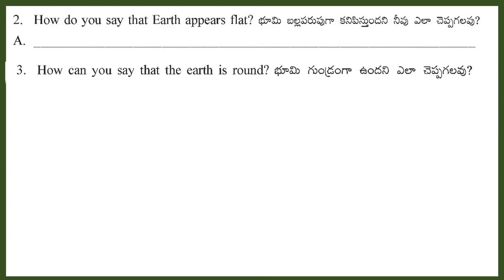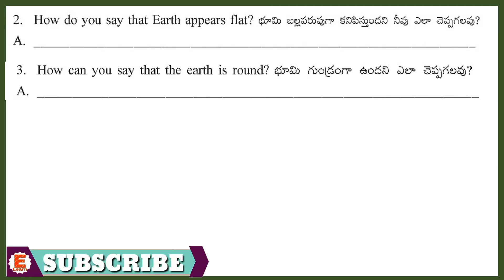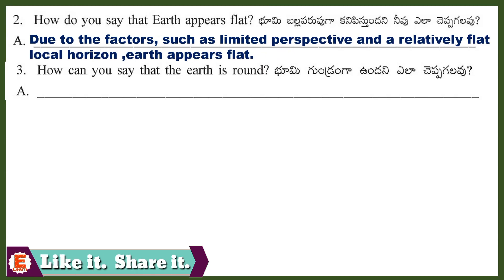Question 2: How do you say that Earth appears flat? Answer: Due to the factors such as limited perspective and a relatively flat local horizon, Earth appears flat.